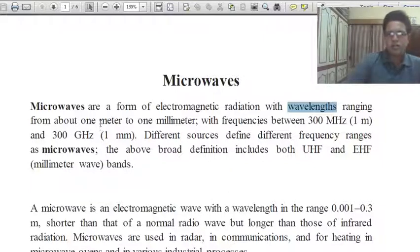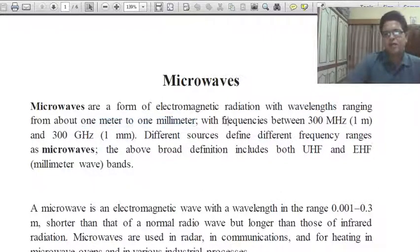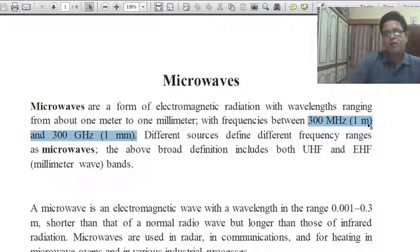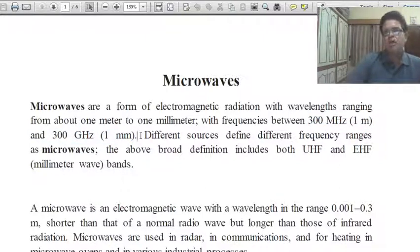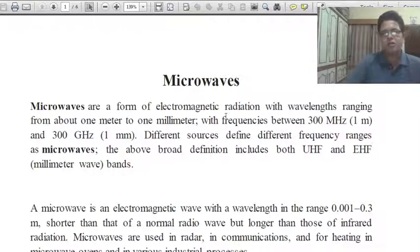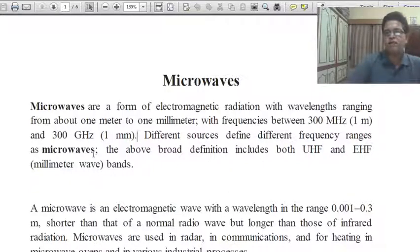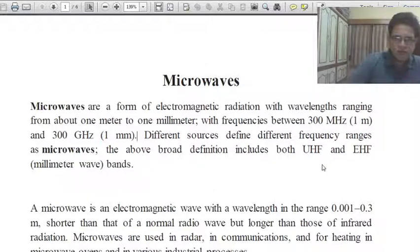The frequency range is 300 megahertz to 300 gigahertz. Different sources define different frequency ranges as microwaves. The above broad definition includes UHF and EHF millimeter wave bands.